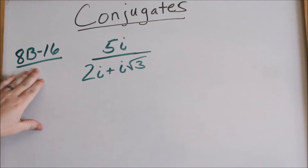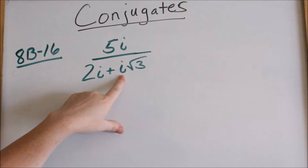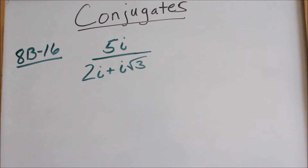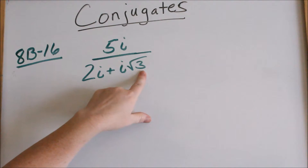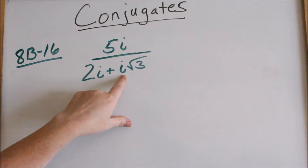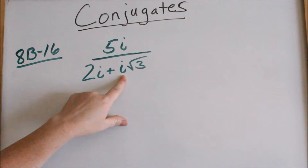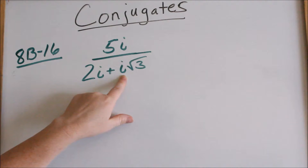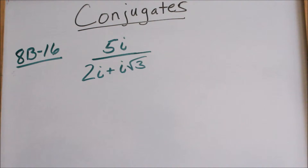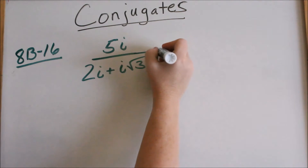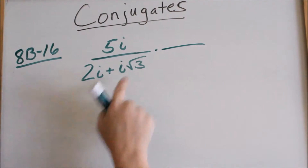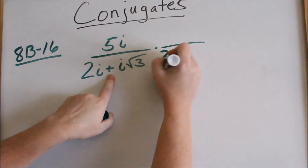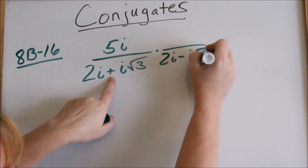Now let's look at 8B16. You have i in the denominator and a radical. In the world of math, you cannot have a radical in the denominator, nor can you have an i in the denominator. The way you get rid of imaginary numbers or radicals in the denominator is by multiplying by the conjugate. So anytime you have an i in the denominator, use the conjugate. Anytime you have a radical in the denominator, use the conjugate. It will get the i's and the radicals to go away. The conjugate looks exactly like this except with the opposite sign, so the conjugate would be 2i minus i square root of 3.